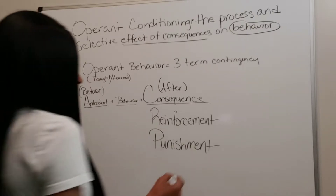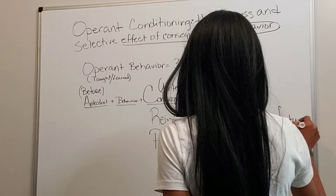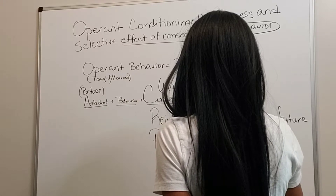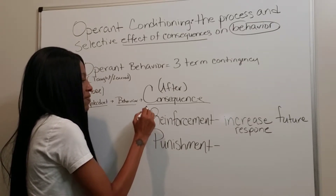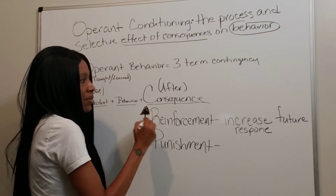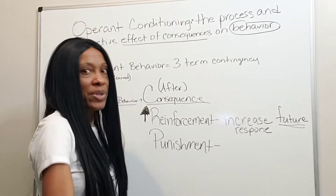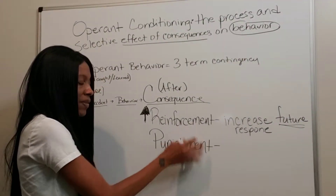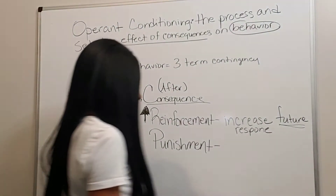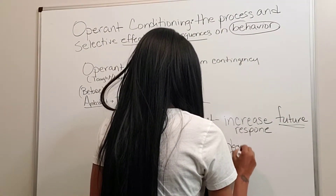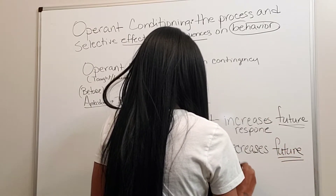These are some terms you'll need to be familiar with, and a lot of times they're used incorrectly. Reinforcement is said to increase a future response — it's going to increase the behavior's odds of happening again. Reinforcement increases future behavior, not the current behavior. The behavior has already happened; it happened before the consequence. You are waiting for it to happen again in the future to see if what you implemented worked. And punishment decreases future behavior or response.